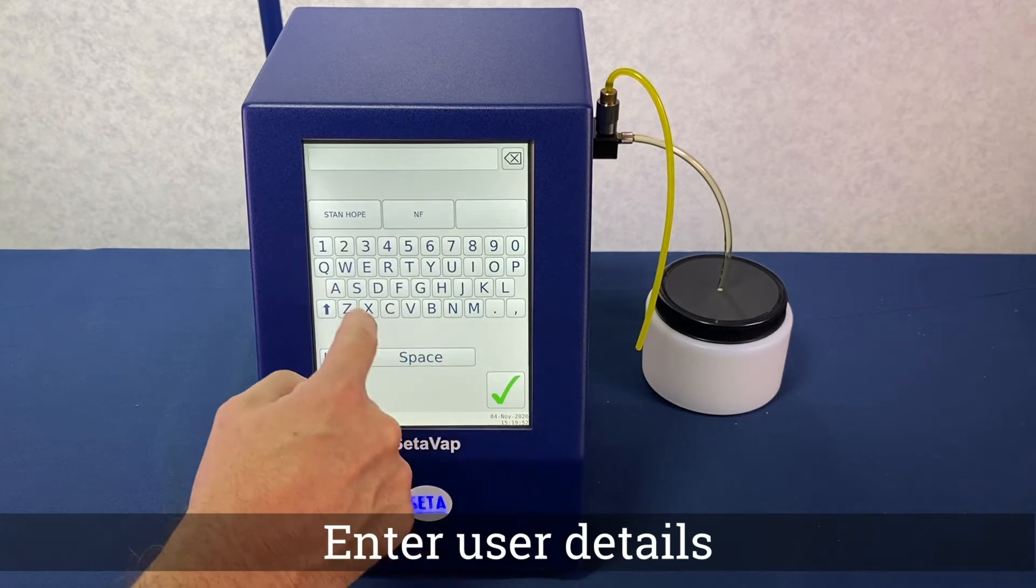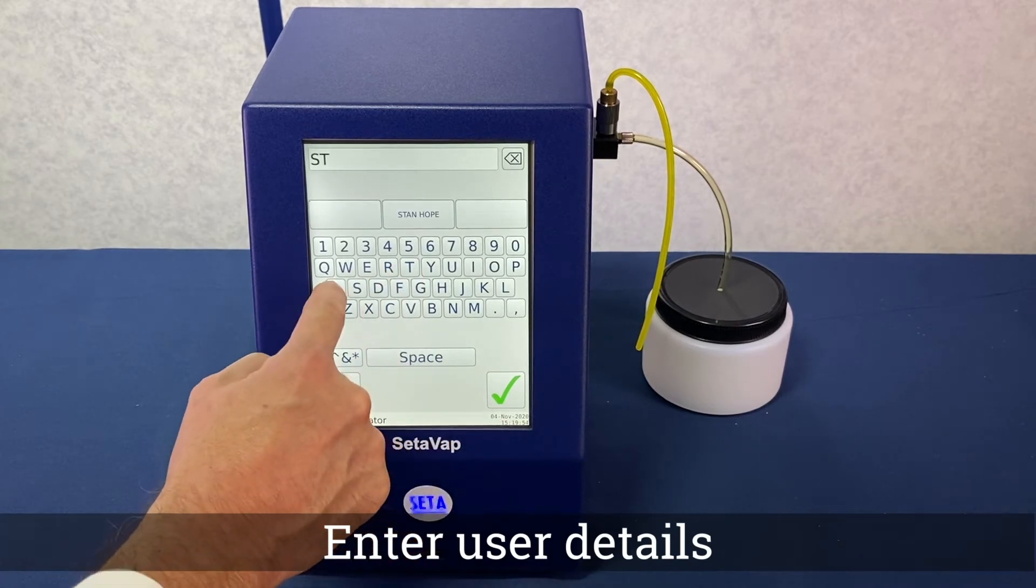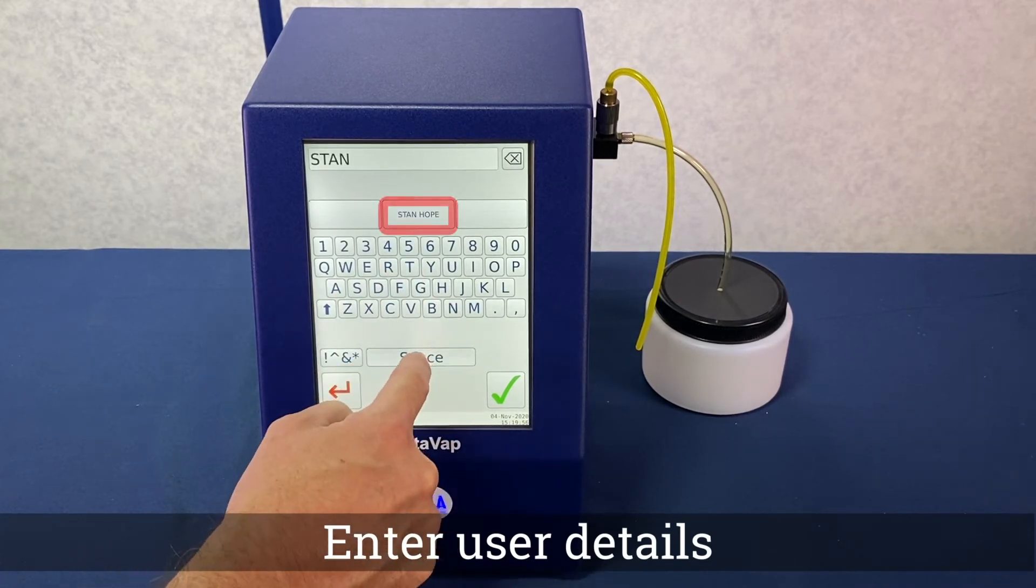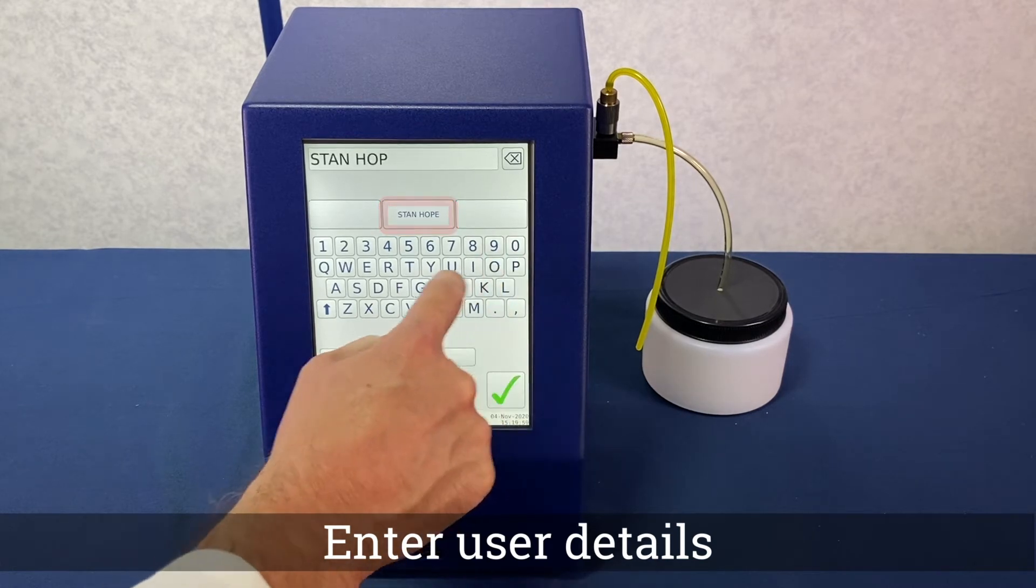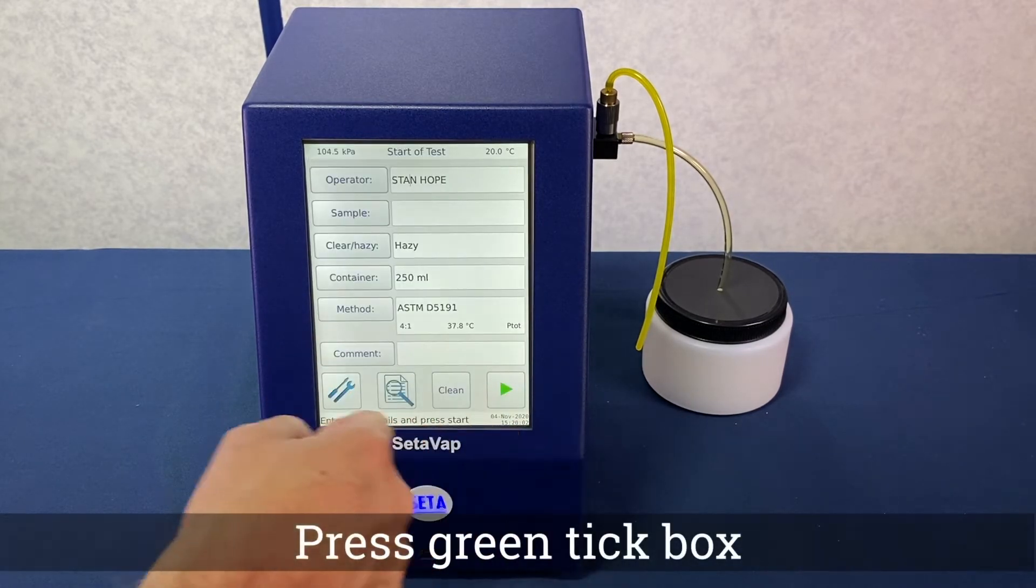With the instrument turned on, select the operator field and enter the user details. Frequent users will automatically appear and can be selected. Press the green tick to proceed.